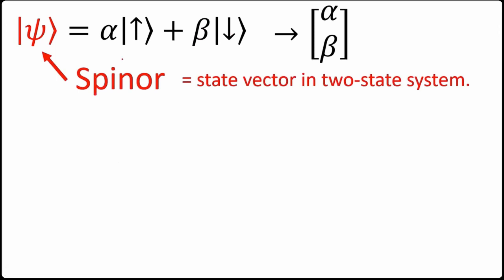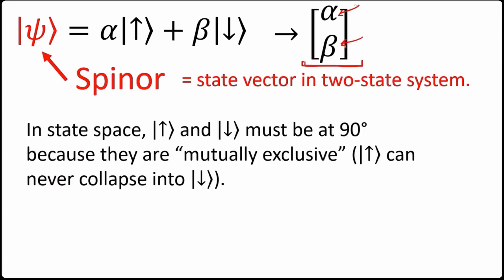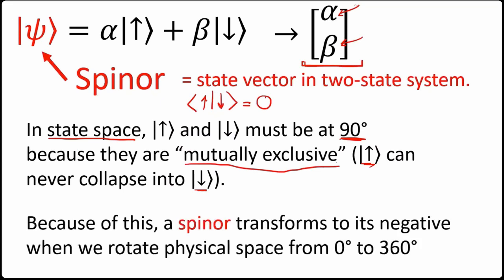A spinor, our two-state superposition of up and down, can be written as a column vector where the entries are the probability amplitudes alpha and beta. Because we can never get up from down — they're orthogonal in state space — we have this weird property where a spinor transforms to its negative when rotated 360 degrees in physical space.